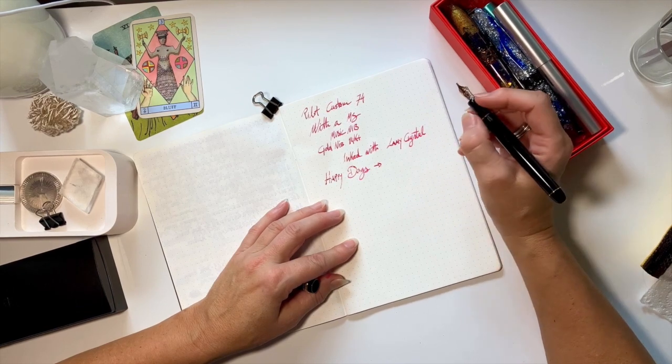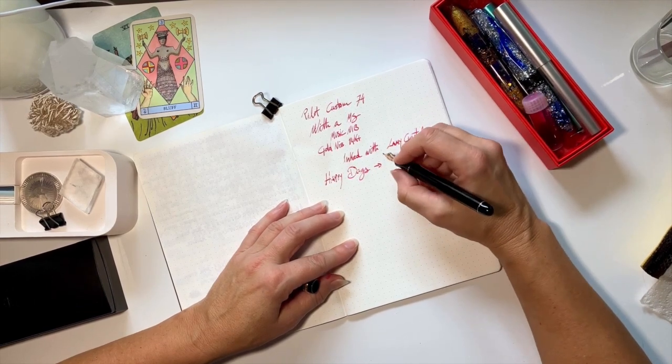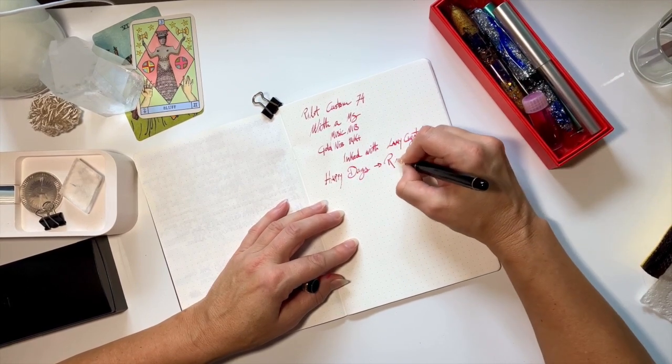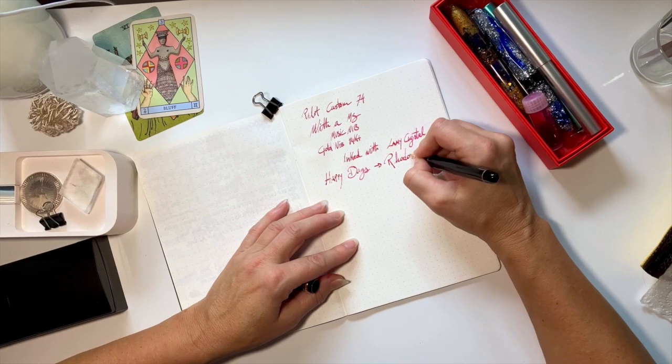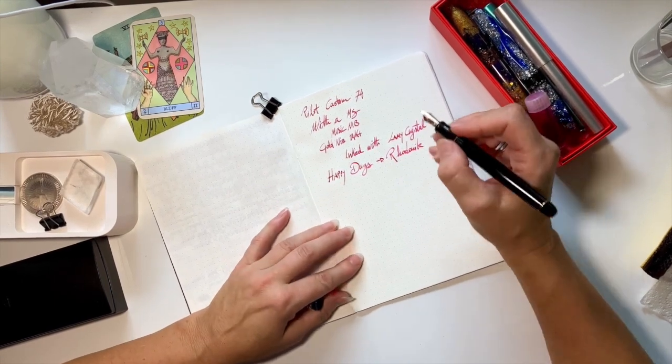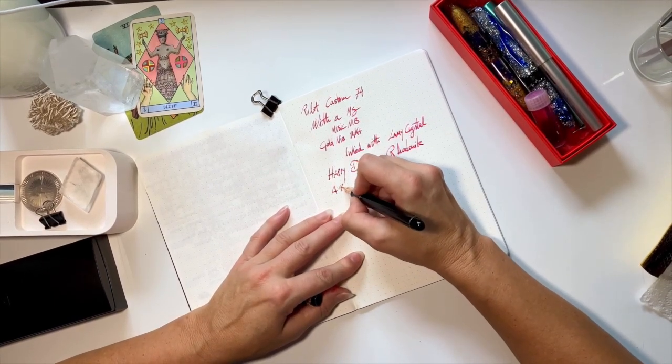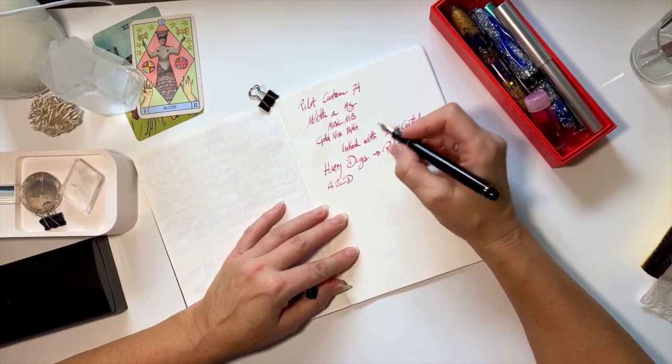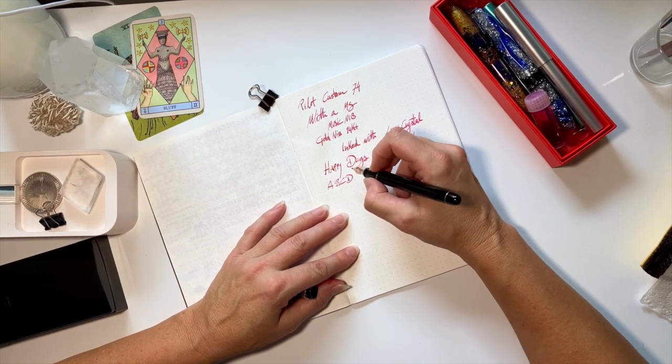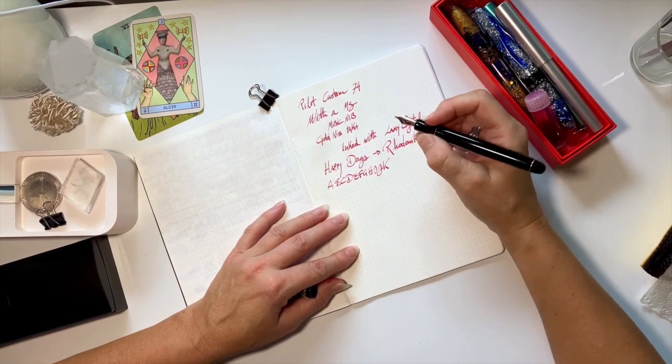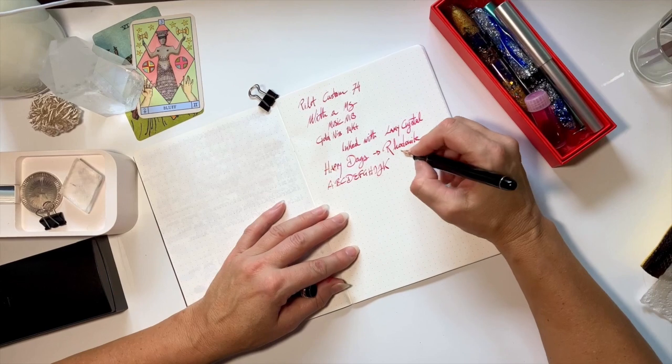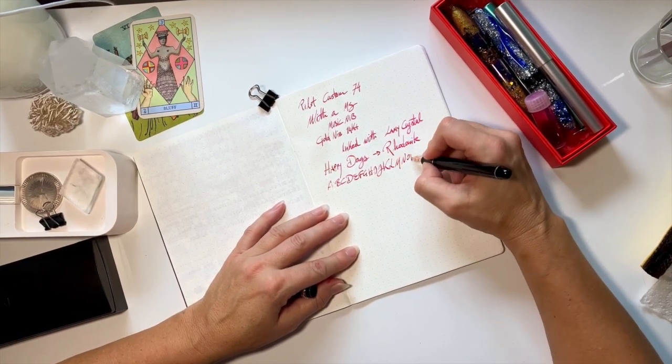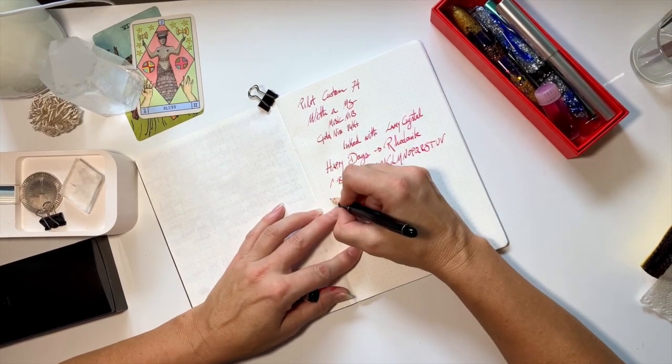Interesting. Happy days. And this is Rhodonite. Wow. Yeah, I was kind of expecting it to be a thinner line for some reason, being a Japanese nib. But it gives me a bit of feedback, which I don't mind.